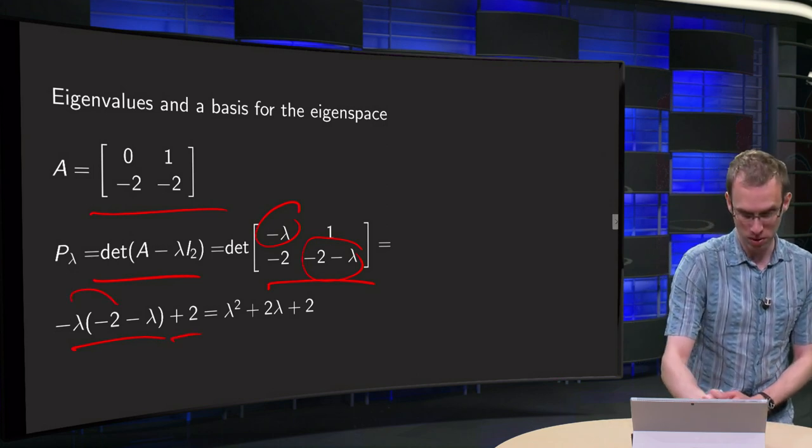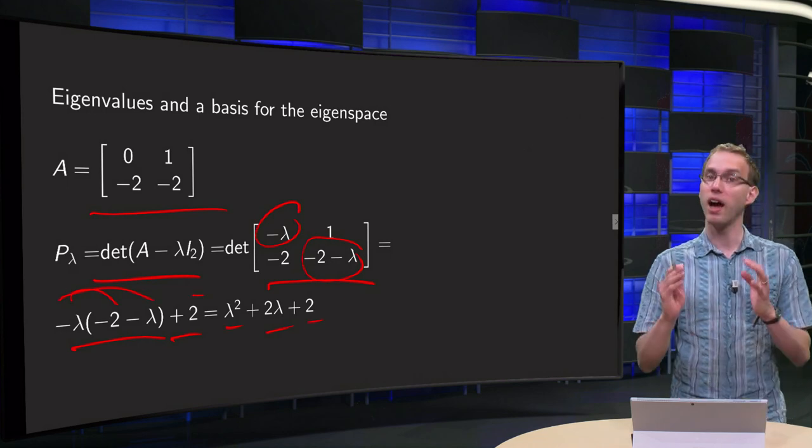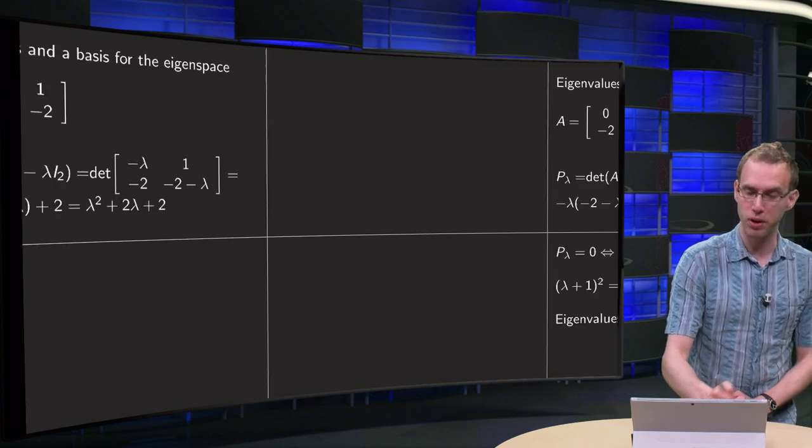So we get 2 lambda plus lambda squared and we keep the 2 over there, and there we have our characteristic polynomial.